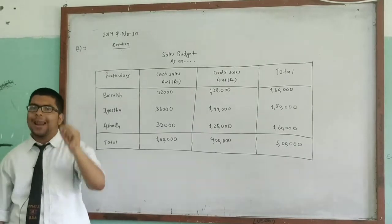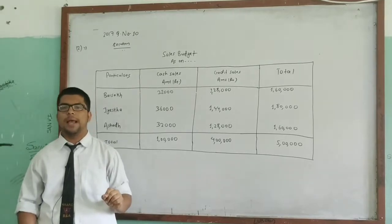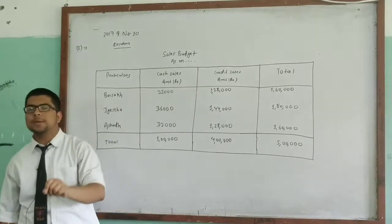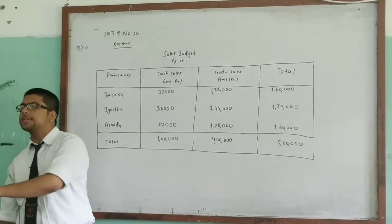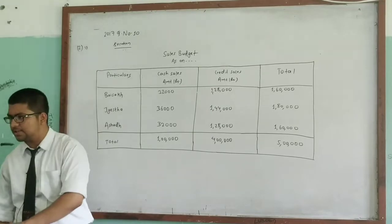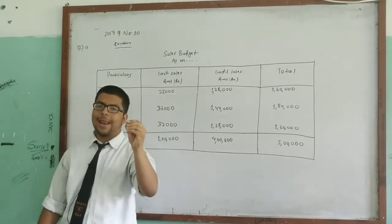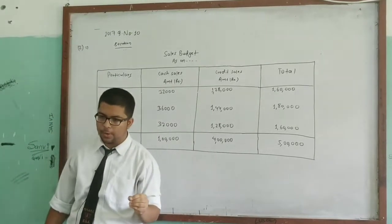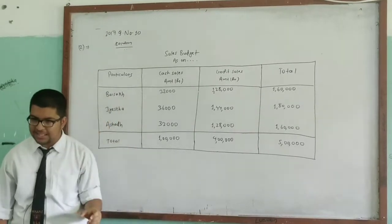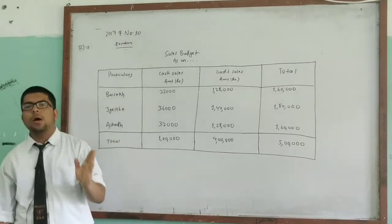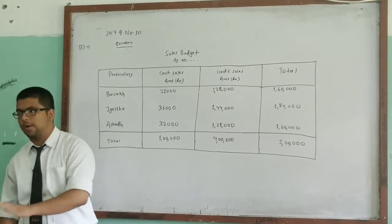For example, if total sales is Rs. 1 lakh 50,000, 20% is cash sales, that gives Rs. 30,000 cash sales. And 80% is credit sales, that gives Rs. 1 lakh 20,000 credit sales. This is the basic concept.